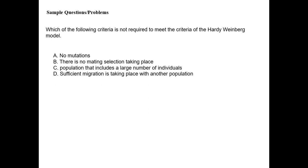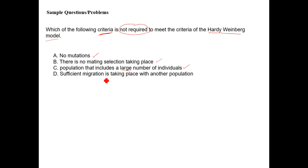A multiple choice question asks which of the following is NOT required for Hardy-Weinberg equilibrium. Let's identify which ones are required: no mutations — yes, that's a criterion; no mate selection (random mating) — yes; large population numbers — yes. 'Sufficient migration' is not a criterion — in fact Hardy-Weinberg requires NO migration. So sufficient migration is the answer that is NOT one of the criteria.